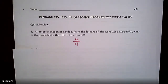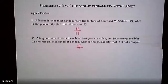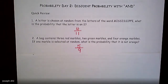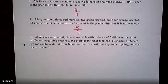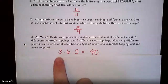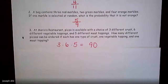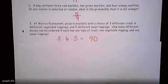The probability that you pick the letter S from Mississippi is 4 out of 11 — there are four letter S's out of a total of 11 letters. For the marble question, the probability that you get a marble that is not orange would be 5 out of 9. For Mario's restaurant, pizza can come with three crusts, six toppings, and five meat toppings, so you multiply the possibilities together to get 90. You don't have to do a tree diagram every time.